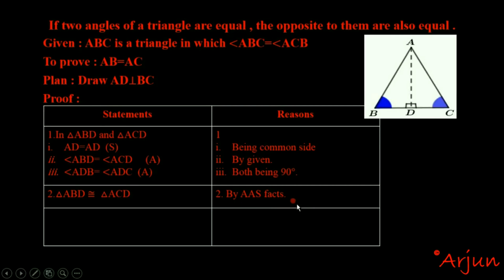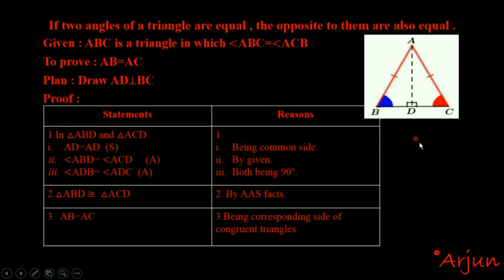Therefore, AB equals AC by corresponding parts of congruent triangles. This completes the proof. Thank you for watching.